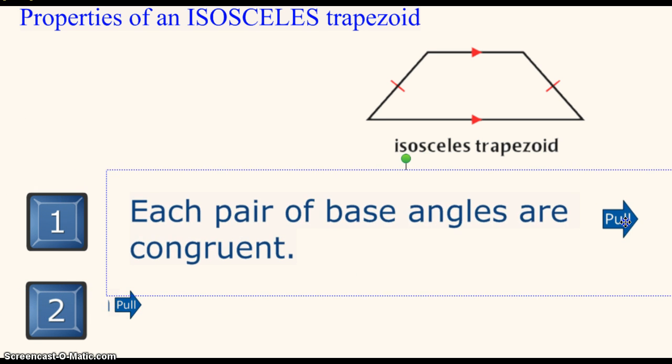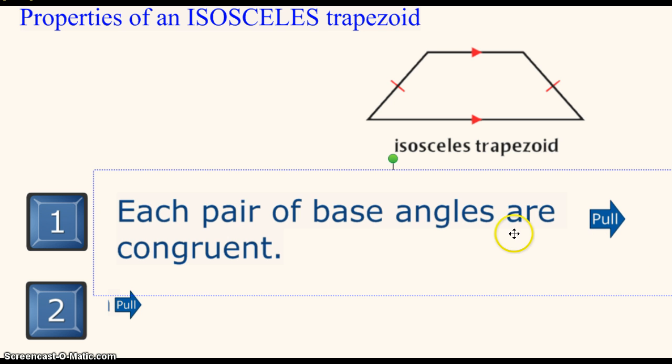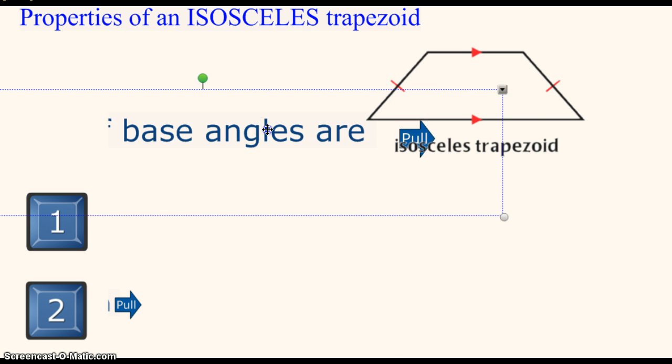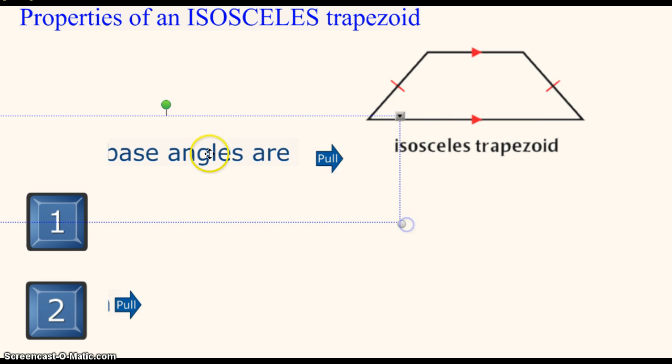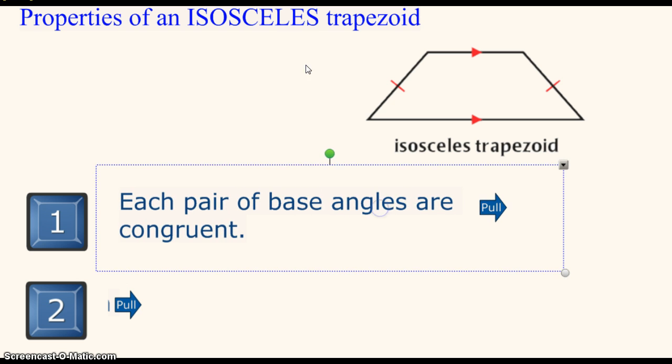The first thing is that each pair of base angles will be congruent. Each pair of base angles will be congruent, meaning that this angle here, which is along the base, will be congruent to this angle here, just like an isosceles triangle.